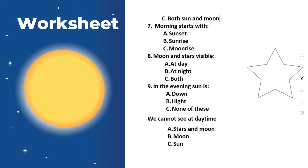Both sun and moon? Morning starts with sunset, sunrise, or moonrise? Moon and stars are visible at day, at night, or both? In the evening, the sun is down, high, or none of these? We cannot see at daytime — stars and moon, moon, or sun?